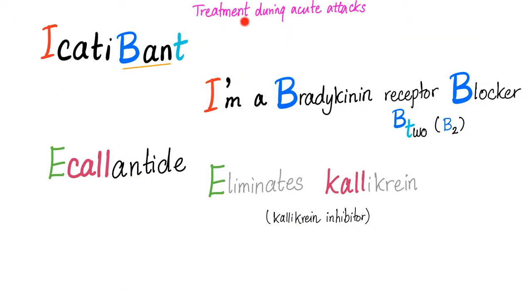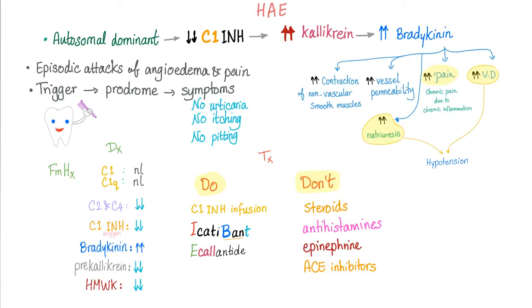If you have none of these options, intubate. Mnemonic for acute treatment: Icatibant — 'I ban bradykinin receptor 2' (T for 2). Ecallantide is a kallikrein inhibitor. Here is everything you need to know about hereditary angioedema in just one slide. Prevention of future attacks: danazol, C1 inhibitor infusion, and fresh frozen plasma.